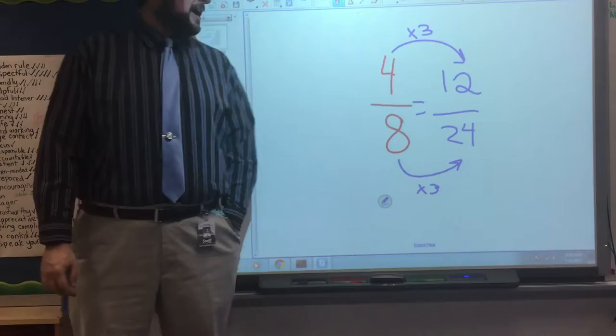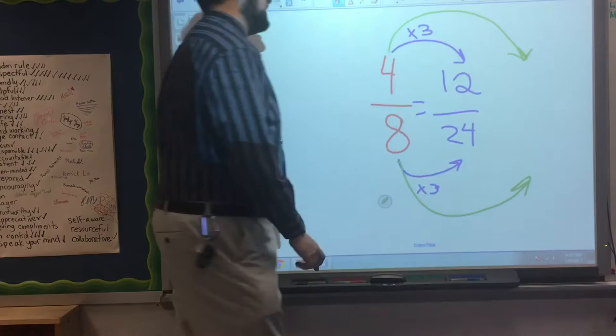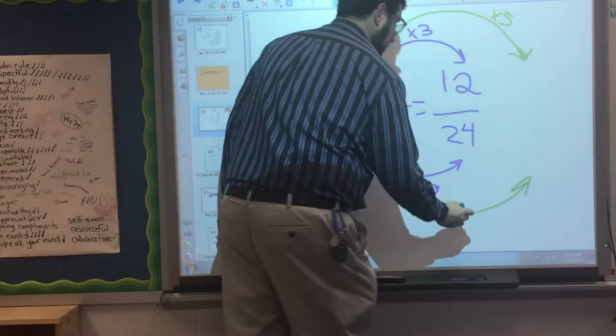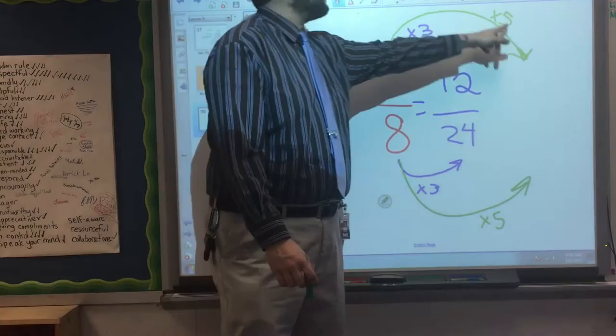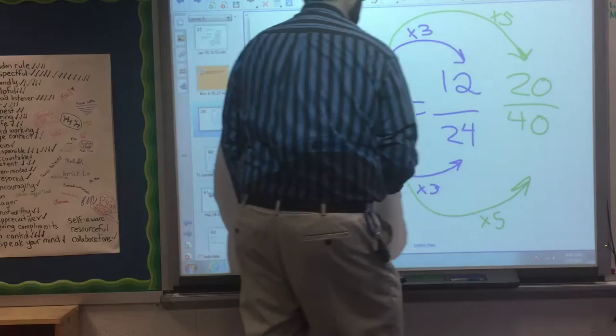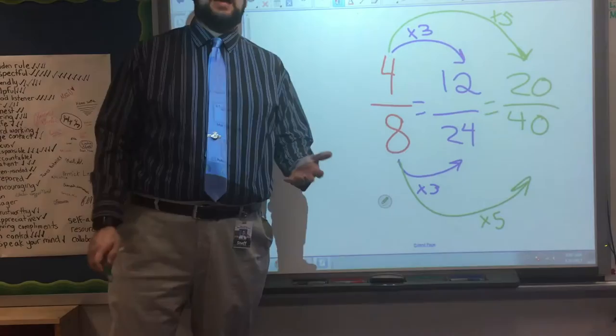And again, we know I can use whatever number I want. So let me try again here to make another equivalent fraction. Last time I multiplied by three. Now I'm going to multiply by... Let's do five. Five tends to be a nice number to multiply by. You get some nice, friendly numbers to work with. All right. Well, what's four times five this time? Twenty. Twenty. Okay. And what's eight times five? Forty. Forty. So, can we say four-eighths is equivalent to twelve twenty-fourths, which is equivalent to twenty-fortieths? Yeah. Yeah. Those are equivalent fractions.